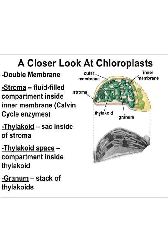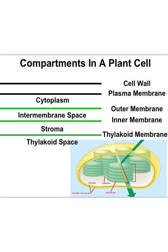Also inside the stroma are stacks of thylakoids. A thylakoid is a single unit — like a single coin or a single Oreo — and a whole stack of thylakoids is called a granum. Thylakoids have a membrane of their own called the thylakoid membrane, and inside the thylakoid membrane is a space called the thylakoid space. Let's look at all of those membranes and layers through a different perspective.